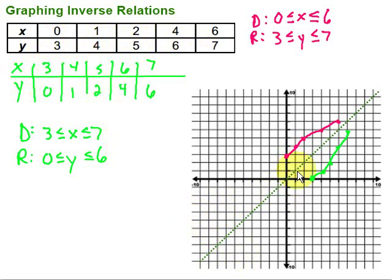So graphing inverse relations. To get my inverse relation, what I want to do is simply switch the x and y values. And when I do that, what I'm going to find is that the graph is reflected over the line y equals x. Also, what we're going to find in terms of the domain and range, those will be reversed as well. Hope this video is helpful. Keep working hard on your math. You can do it.